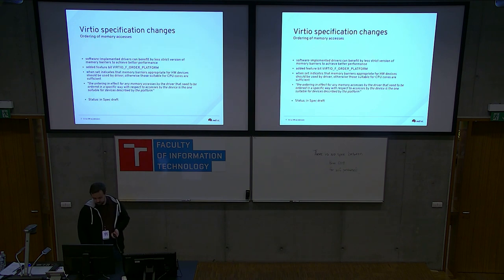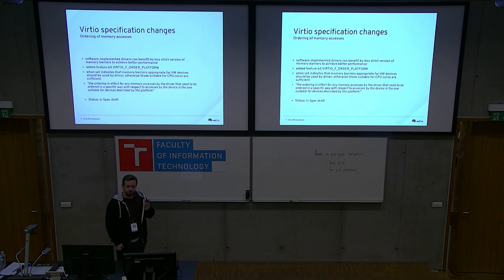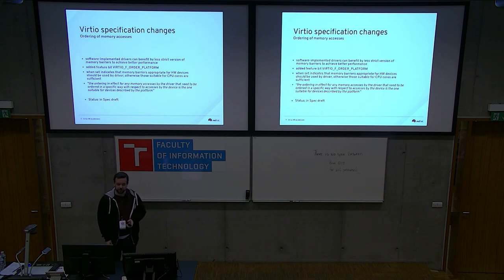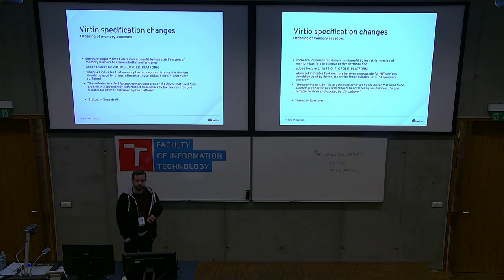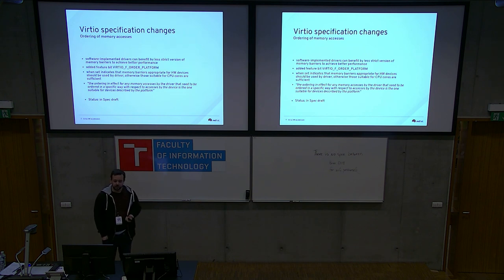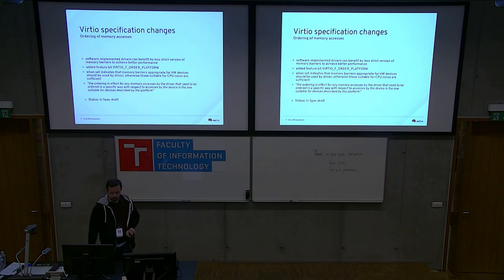Another thing: ordering of memory accesses. Software-implemented devices and actual real hardware might have different requirements there. Often a hardware-implemented device will need more strict memory ordering, while a software device needs the memory barriers suitable for a CPU. There's a feature bit added for that — if that bit is present, it means the driver has to use stronger memory barriers. This is also in the specification.